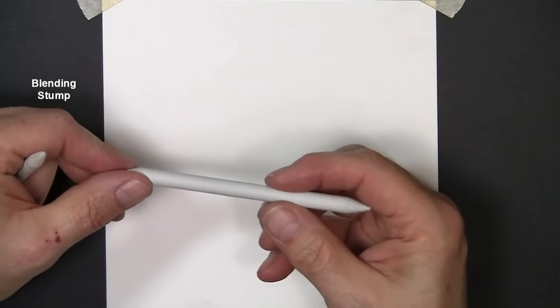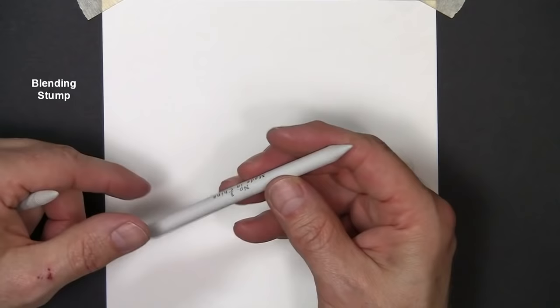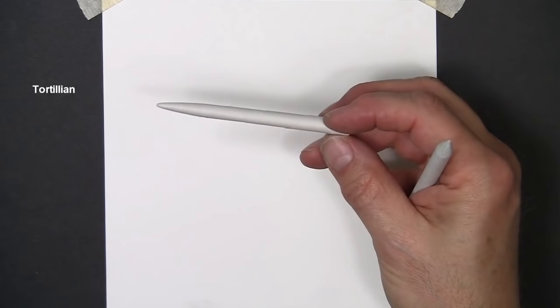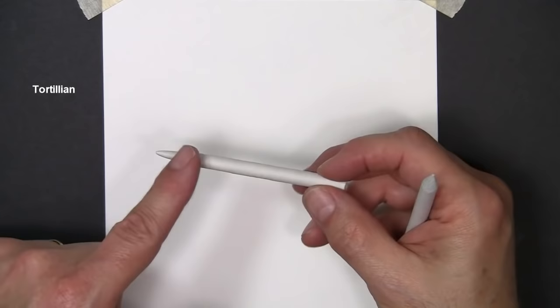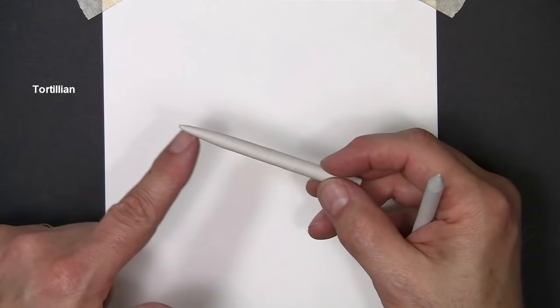The stump is a rolled piece of paper. It's actually compressed paper, and it's rolled really tightly, and it has two ends on it. Another blending implement here is called a tortillion. It is usually smaller, and it only has one end on it, and it's not compressed paper, it's just rolled paper that's very tight.